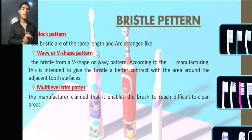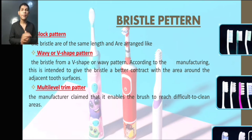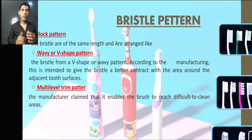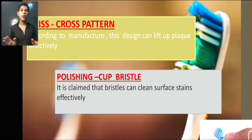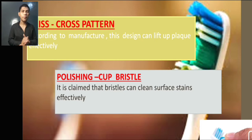The bristle pattern refers to the different types of patterns on the toothbrush head. For example, the flat pattern has bristles of the same length. The V-shaped pattern has bristles arranged in a V-shape, intended to give the bristles better contact with the area around the adjacent tooth surface. The multi-level trim pattern claims to be able to brush difficult-to-clean areas. The criss-cross pattern is designed for length and effectiveness. The polishing cup bristle claims to clean surfaces and stains effectively.